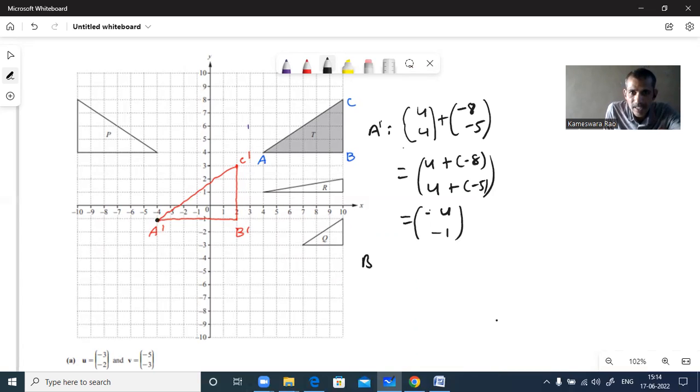Similarly we can find B dash. B dash is what? Here B first you see, 10 comma 4. You have to add the translation vector minus 8 minus 5. Okay. 10 minus 8 is 2, 4 minus 5 is minus 1. B dash is 2 comma minus 1.